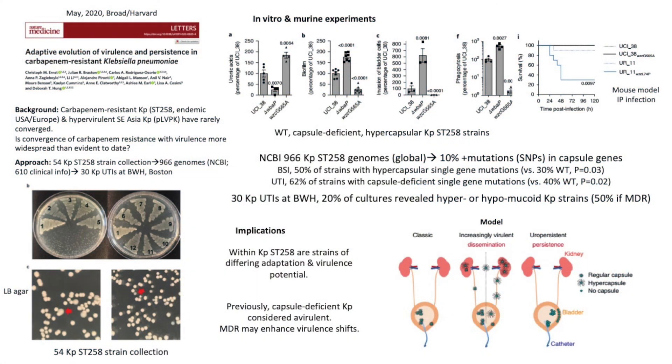They then looked at urinary tract infections at Brigham and Women's Hospital and identified that 20% of cultures from 30 infections revealed either hypermucoid or hypomucoid KP strains, and the chance of this was higher if they were multi-drug resistant. The implications are that within KP ST258 there are strains of differing adaptation and virulence potential. Notably, previously capsule-deficient KP strains had been considered avirulent, and these data suggested that multi-drug resistance may somehow enhance virulence shifts.